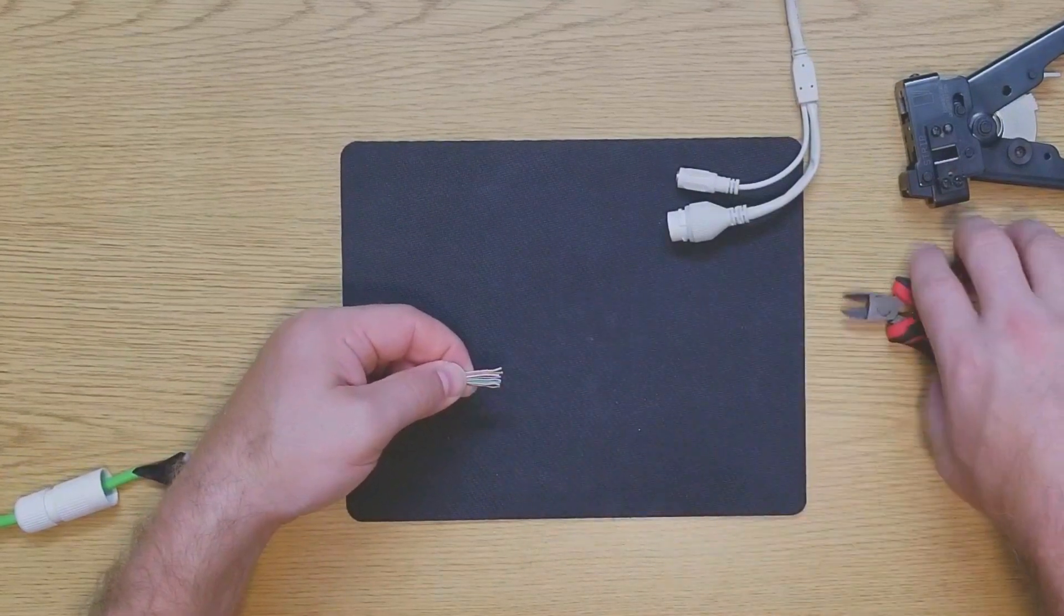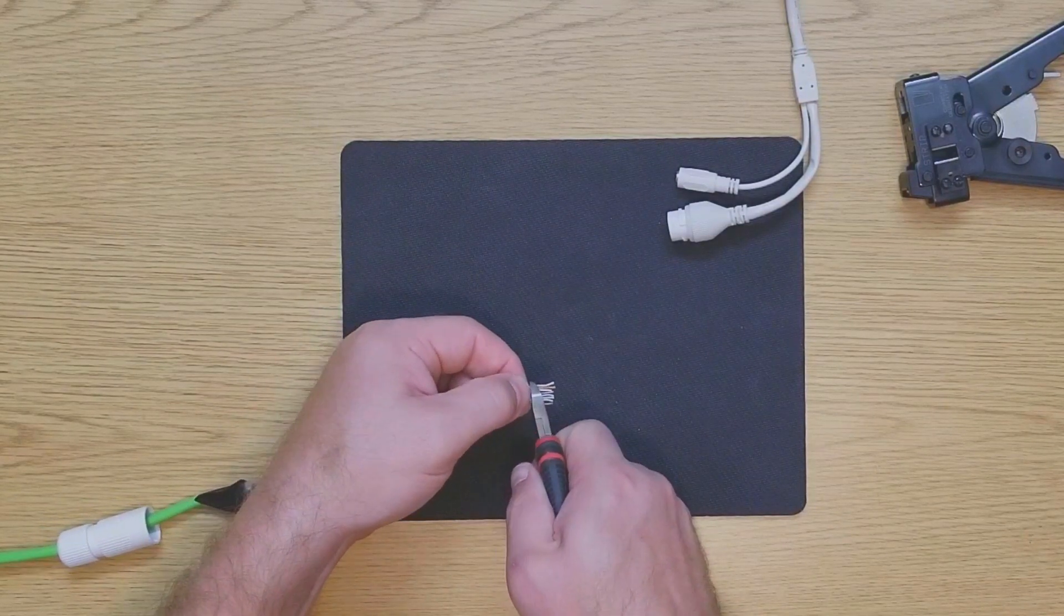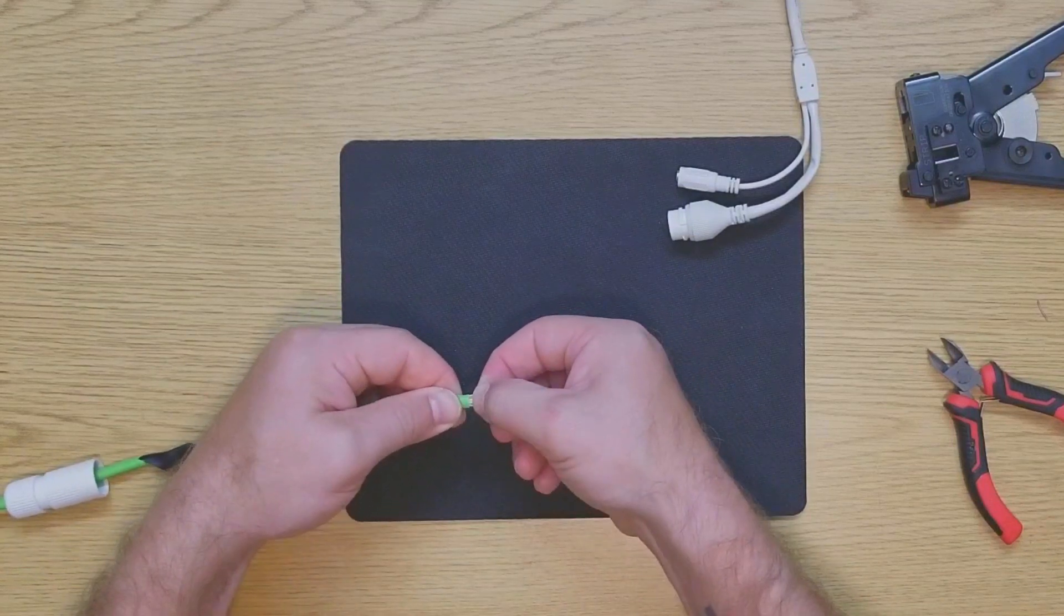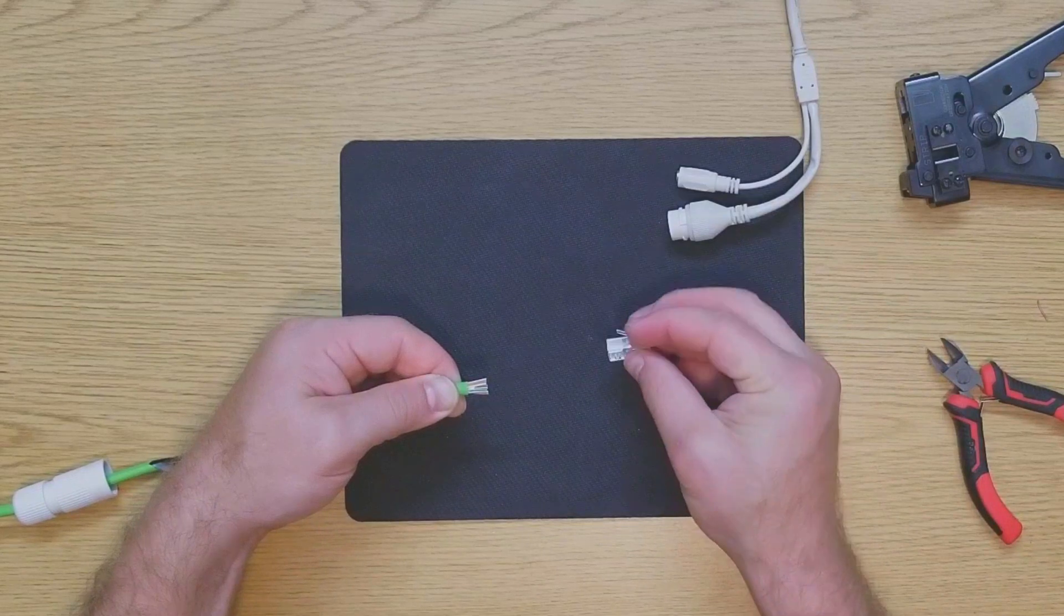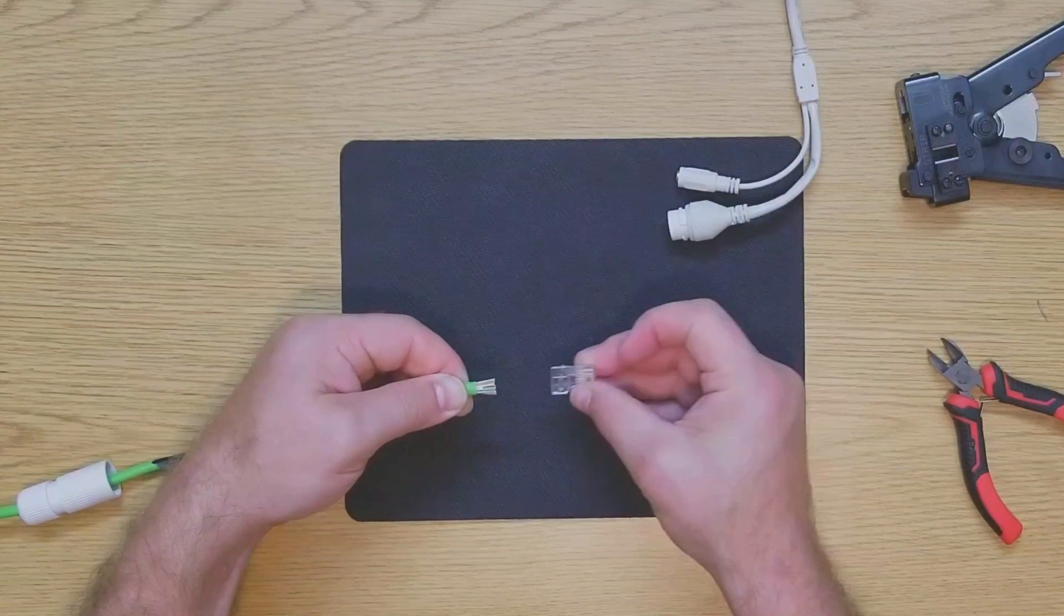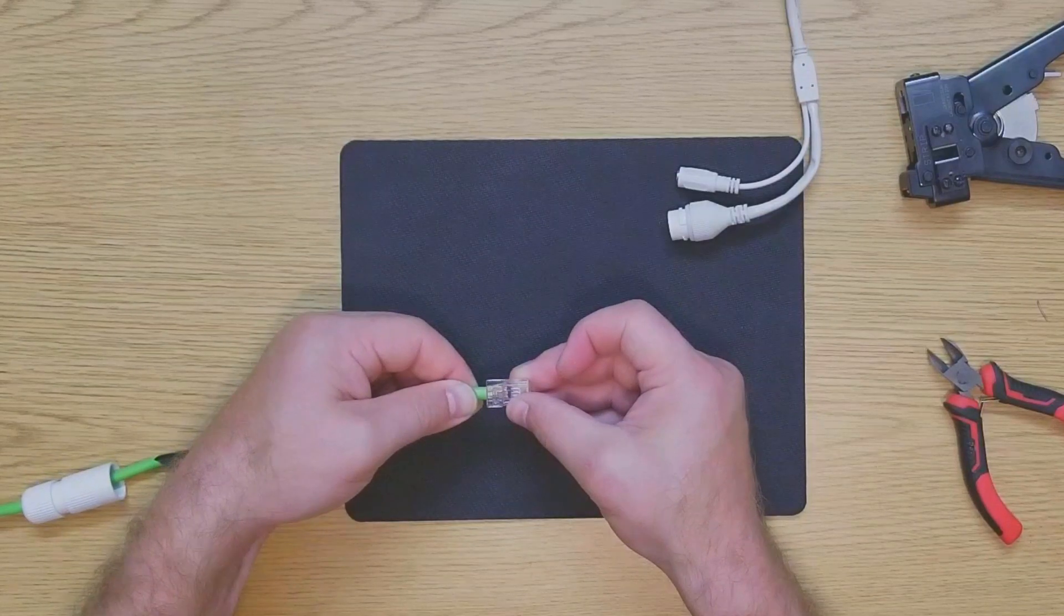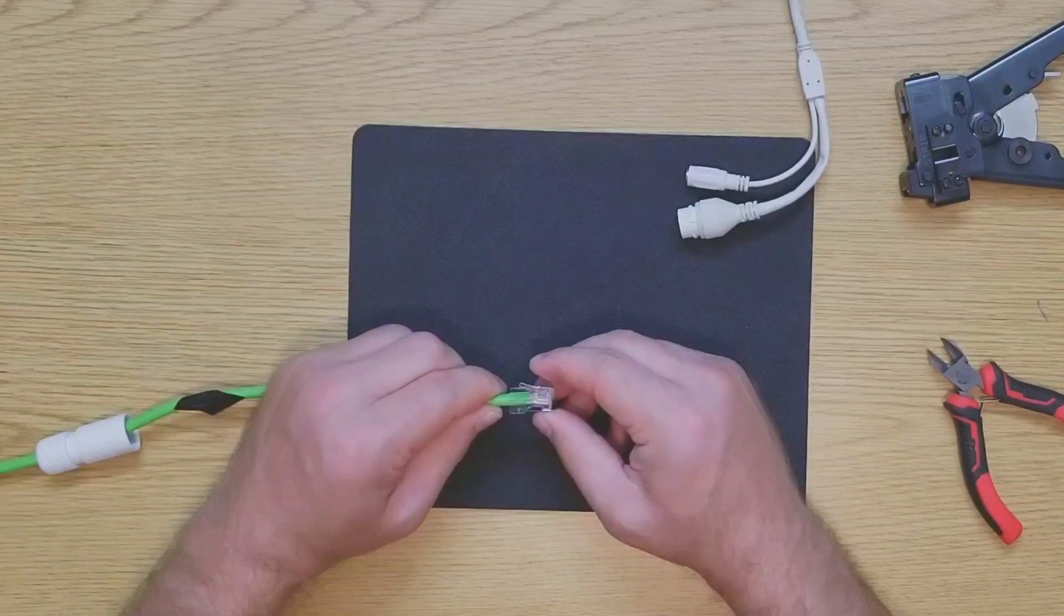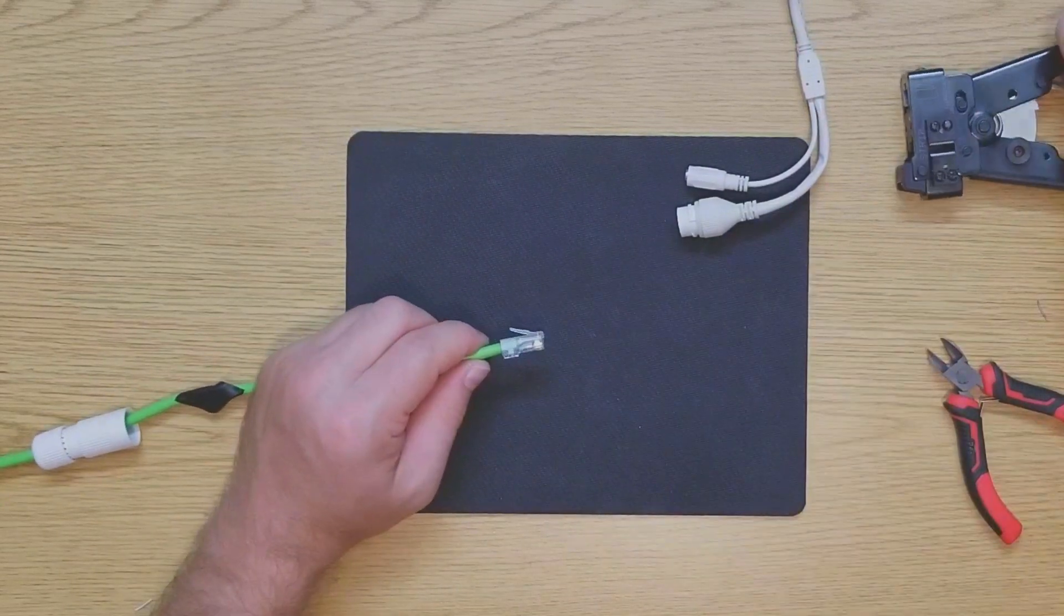Now it's time to go ahead and finalize the RJ45 connection. We're going to trim our wires off to about one half inch of actual wire leads. Check your wire order one last time, take your RJ45 connector, and remember with the clip side down, we're going to place our wires inside, making sure the wires travel through the grooves or holes inside the connector in the correct order.